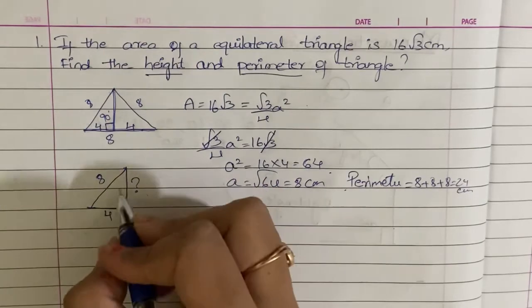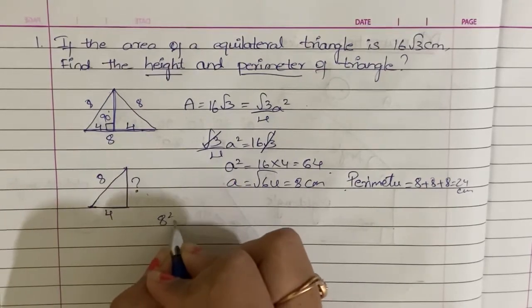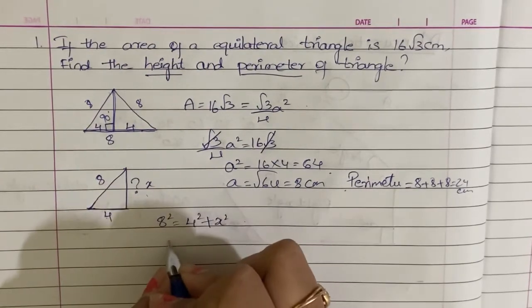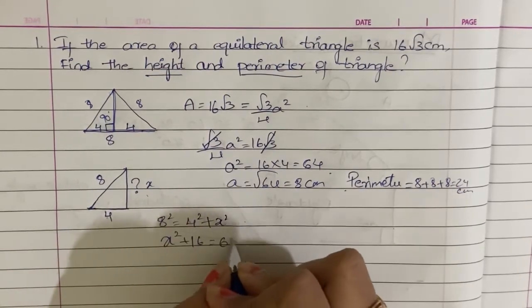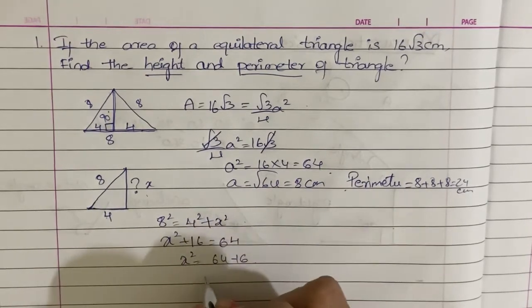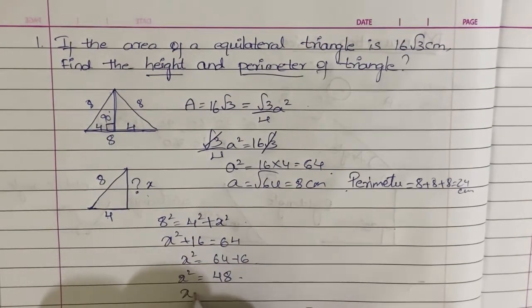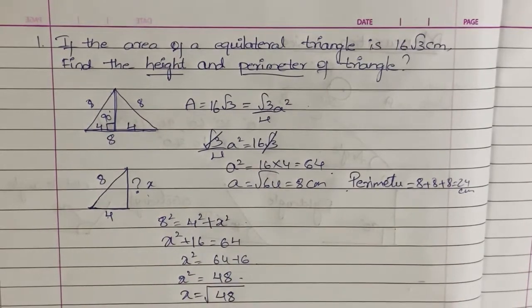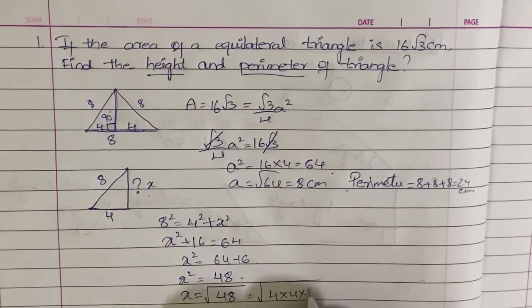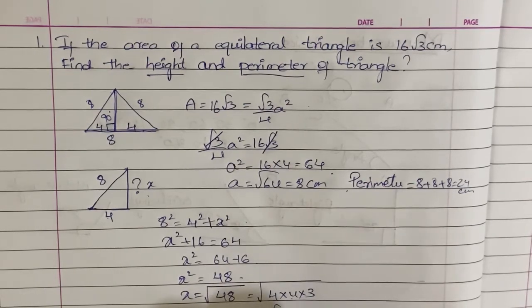Using the Pythagorean theorem, with the hypotenuse equal to 8 and the base half equal to 4: 8 squared equals 4 squared plus x squared. So x squared plus 16 equals 64. Therefore, x squared equals 64 minus 16, that is 48. x equals root 48, which simplifies as 4 times 4 times 3 — root of 48 equals 4 root 3. So the height is equal to 4 root 3 centimeters. Thank you for watching the video.